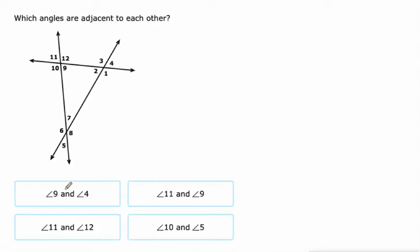Adjacent angles. All right. We'll just go through these. Nine and four. They have to share a vertex and they have to have a common side. Nine and four. They definitely don't share a common vertex. What about 11 and nine? 11 and nine. Those are called vertical angles. They are not adjacent. 11 and 12. Yeah, those are adjacent. They have a common vertex right there and a common side right there.